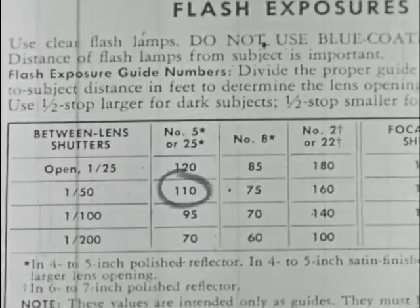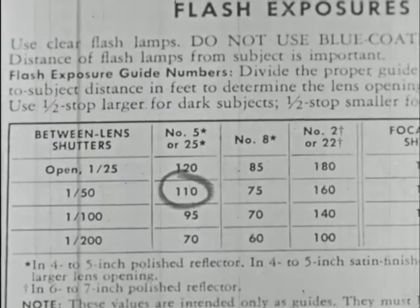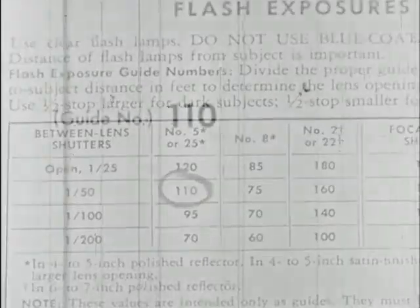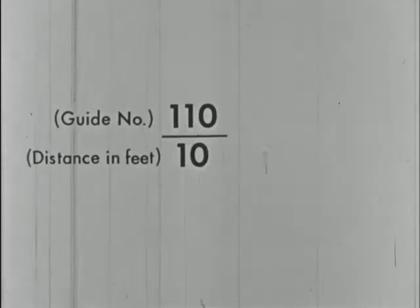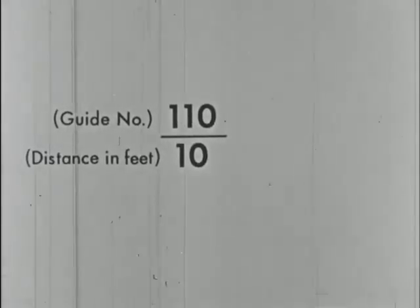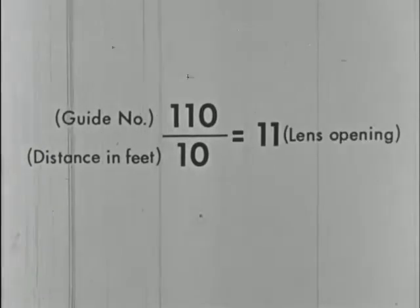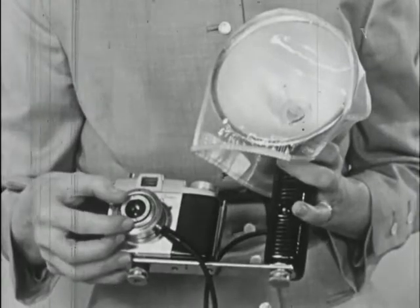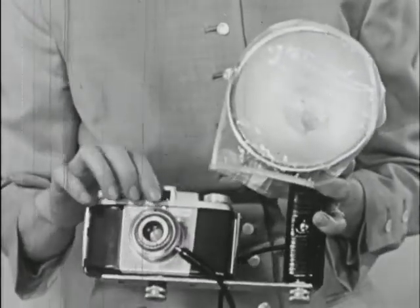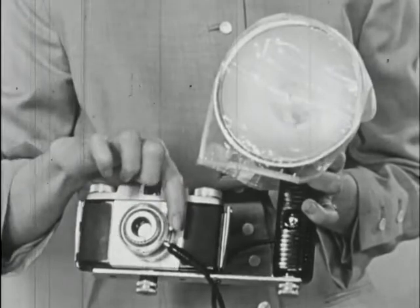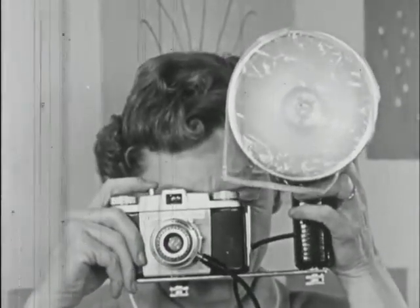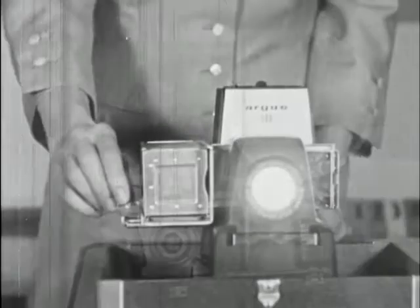To find the camera settings, select the guide number for the film and bulb you are using. At 1/50th of a second, the guide number is 110. To find the proper lens setting, divide the guide number by the distance in feet. For a distance of 10 feet, the result would be 11, so the lens opening is set on 11. Then line up the subject in the viewfinder and snap the picture — another slide for your collection.